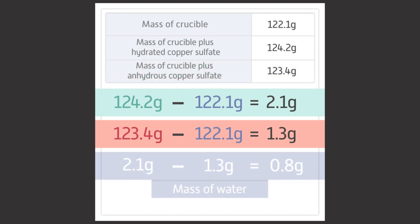Consequently, the mass of water in the hydrated copper sulfate must be 2.1 minus 1.3 equals 0.8 grams.